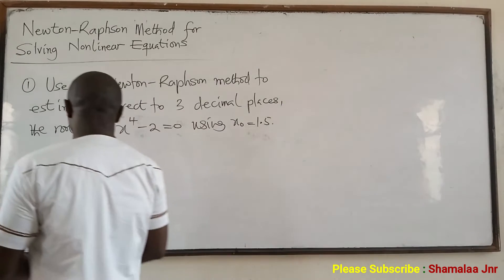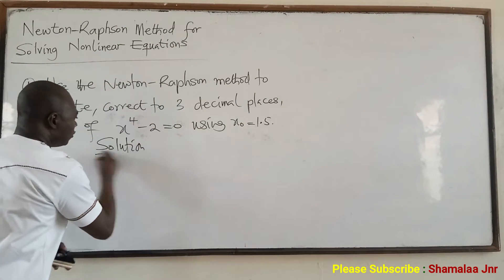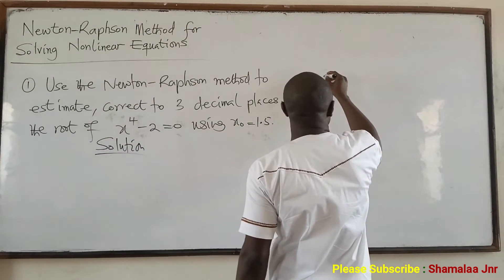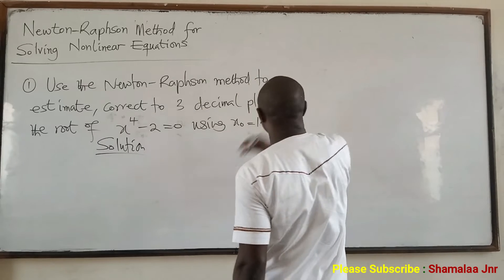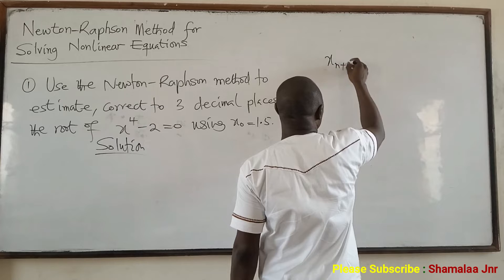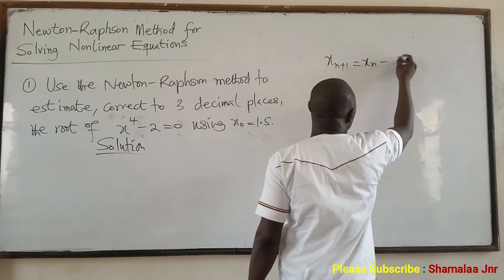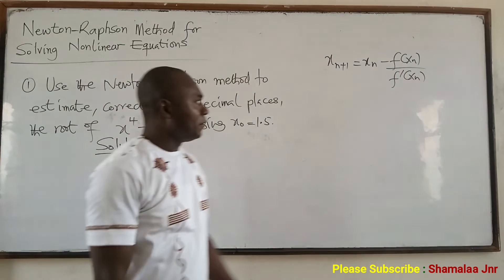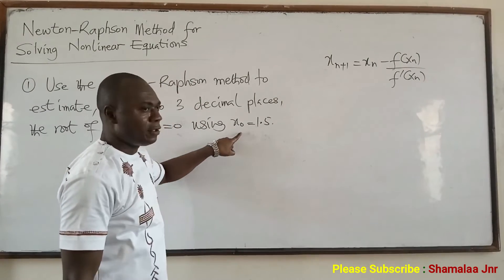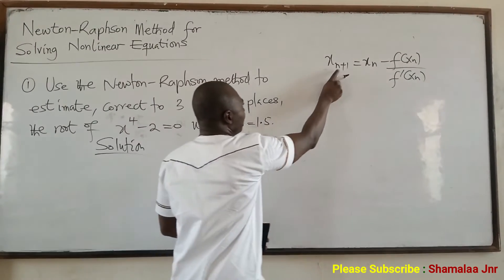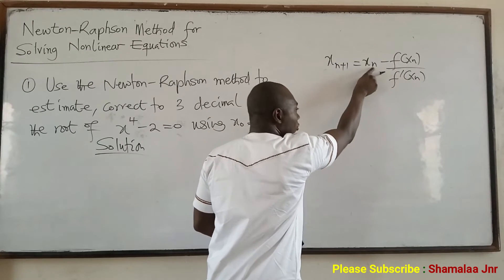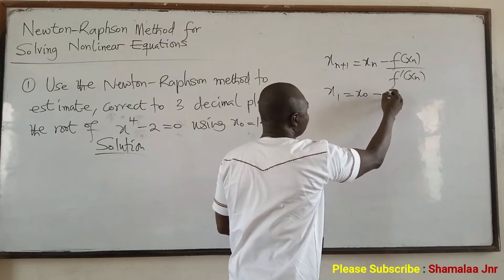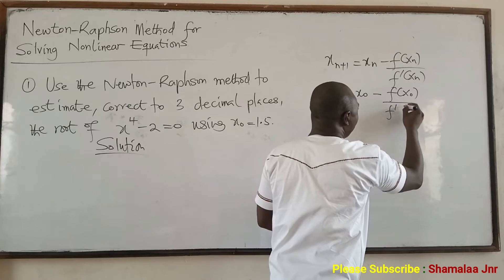To do this solution, I'm going to use the Newton-Raphson formula. It is this: X n+1 is equal to Xn minus F of Xn all over F prime of Xn. Now, look on the board — you see that we've been given x0. So when N is equal to 0, we're going to have X1 is equal to X0 minus F of X0 over F prime of X0.